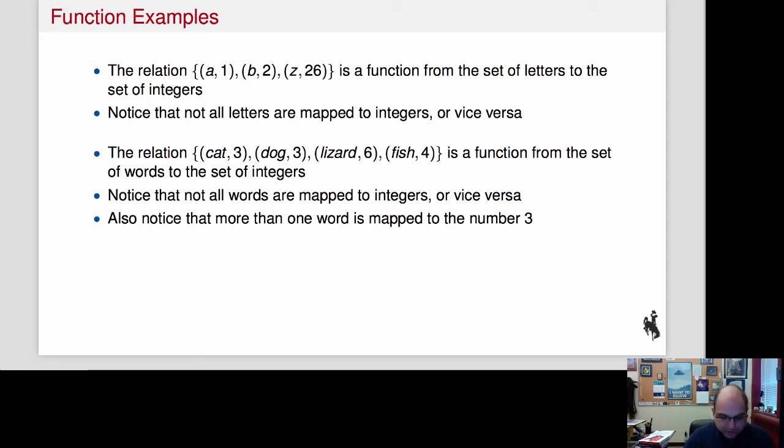So here's a different relation. This one has (cat,3), (dog,3), (lizard,6), (fish,4). The intuition is that this is like the length function—it tells me how many characters each word has. And again, not all words are mapped to integers simply because I didn't list them. If I told you f(x) is equal to the length of x, then I would have gotten them all with a rule. But I just gave you a set of a relation, so we didn't get them all.